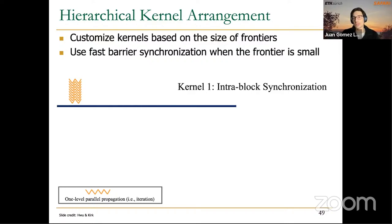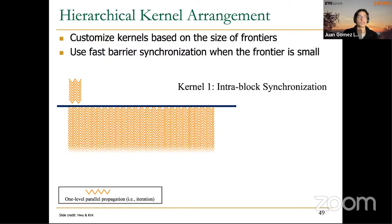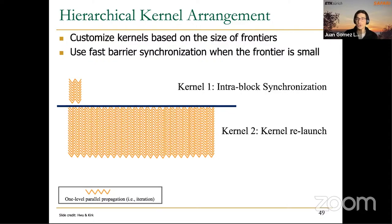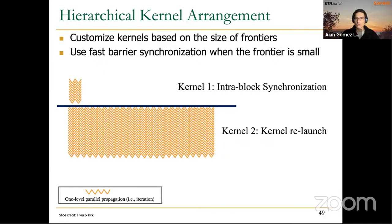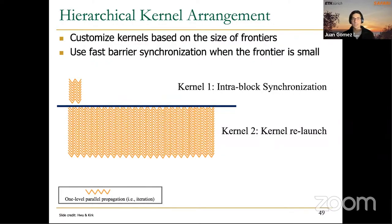At that point, it makes sense to terminate the kernel and launch Kernel 2 for large-sized frontiers, based on kernel termination and relaunch. Kernel 2 starts, we have our frontier — maybe millions of nodes — we launch as many thread blocks as we need. The threads visit all nodes in the current frontier, generate an output frontier, then terminate the kernel to synchronize all thread blocks, and start a new iteration with the new input frontier.